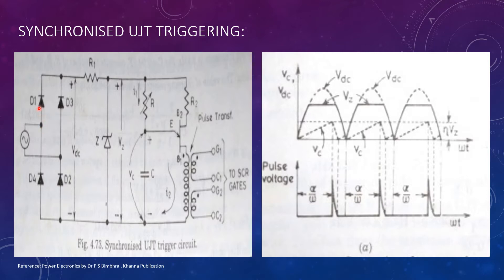Diodes D1 to D4 rectify AC to DC. Resistor R1 drops VDC to a suitable value for Zener diode Z and the UJT.